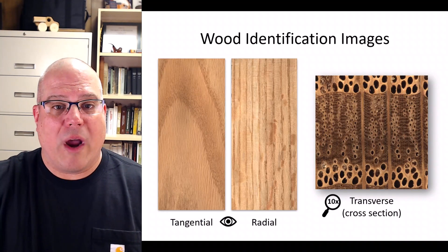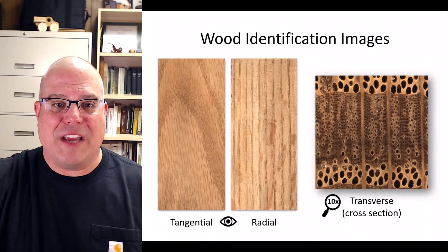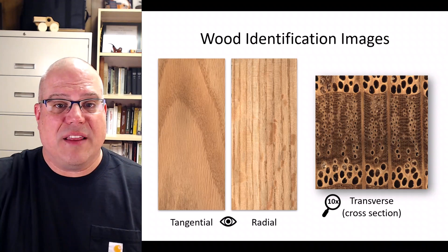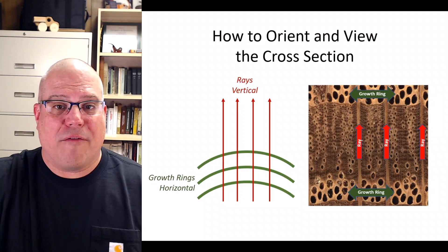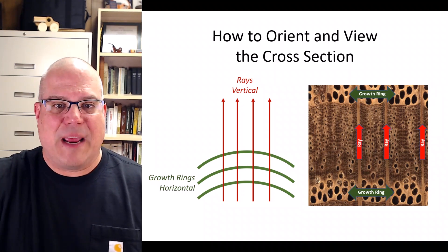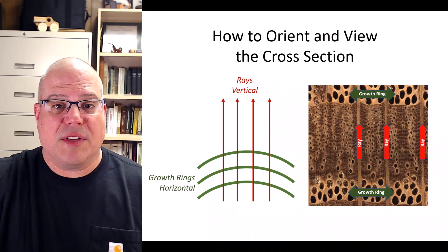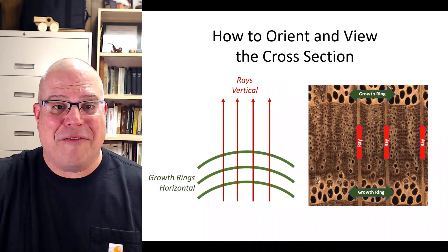Before we start looking at red oak and white oak anatomically, let's get acquainted with the kinds of images I'll show you for each wood identification going forward. I'll start by showing you tangential and radial faces of each wood as you would see them with your naked eye. Then I'll show you an extreme close-up of the transverse surface like you might see under a 10x hand lens. Most wood anatomy reference books orient their transverse surface images the same way — rays are always vertical and growth rings are always horizontal. When you view actual wood samples, it's good practice to orient your specimens the same way so you can easily compare them to the pictures.